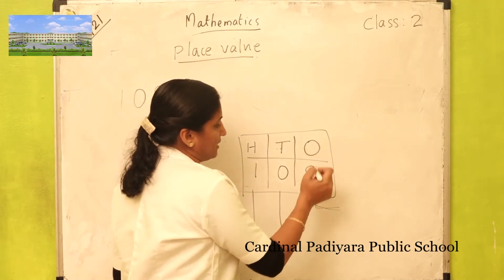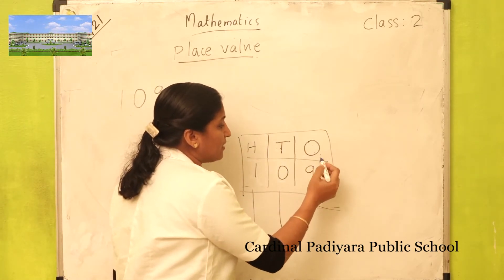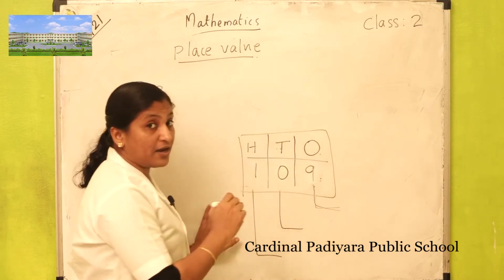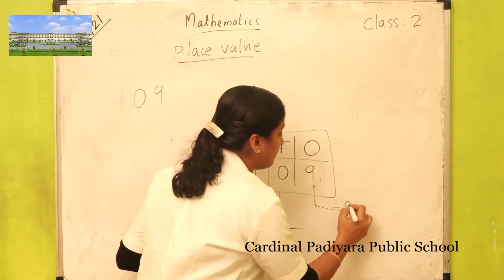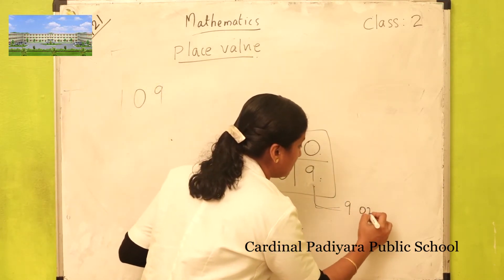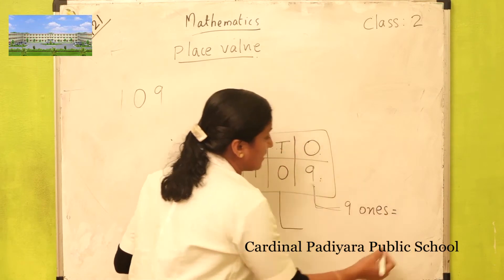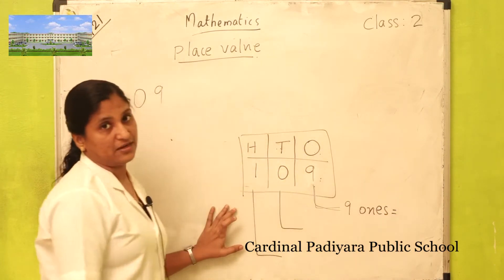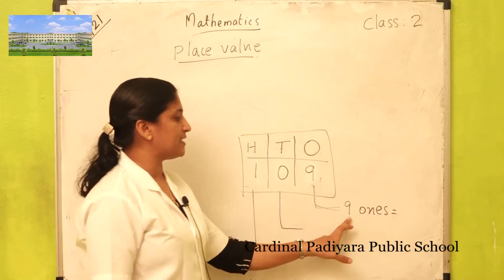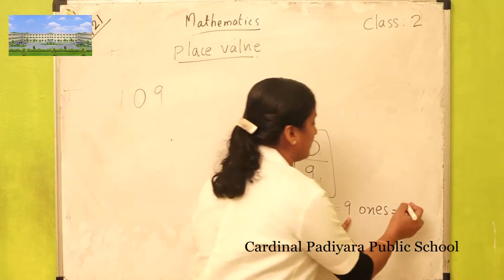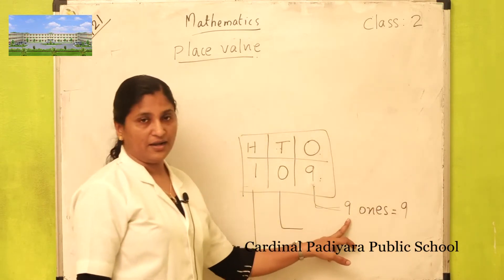Nine comes under ones place. How many ones here? Nine ones. Nine ones is nine — that number itself.